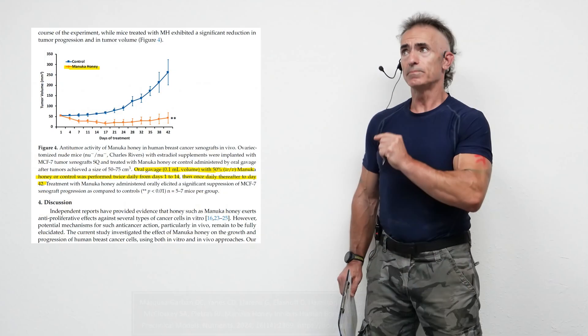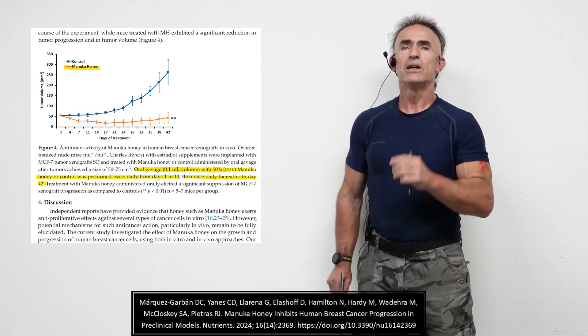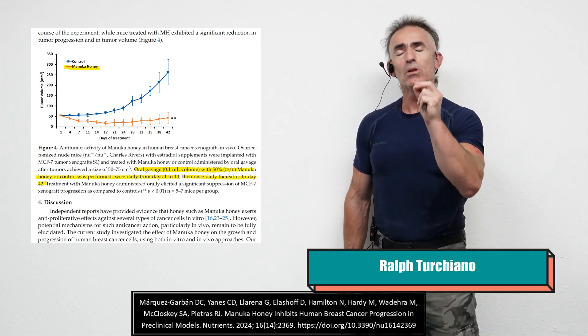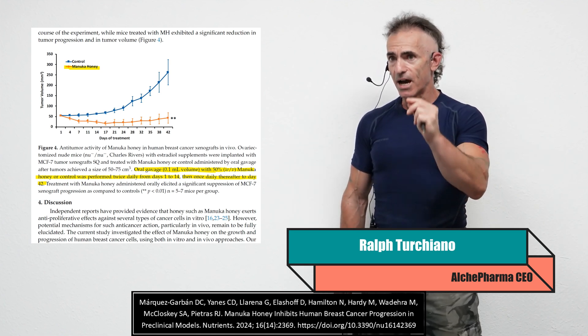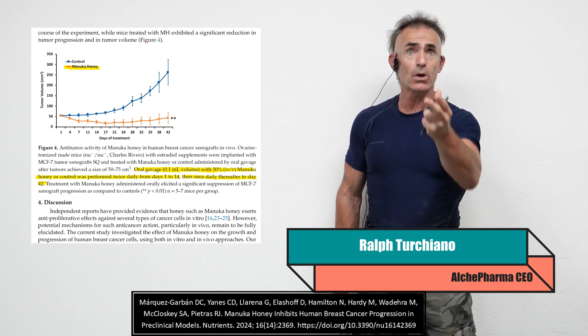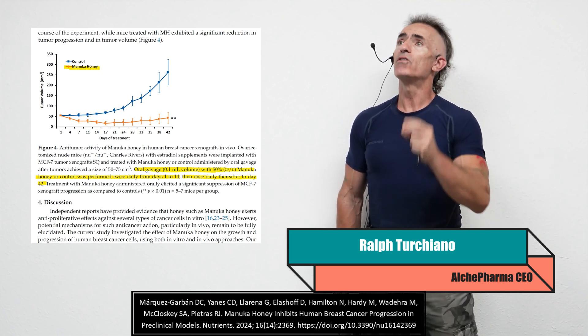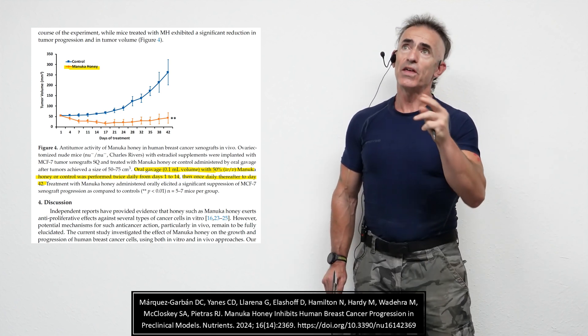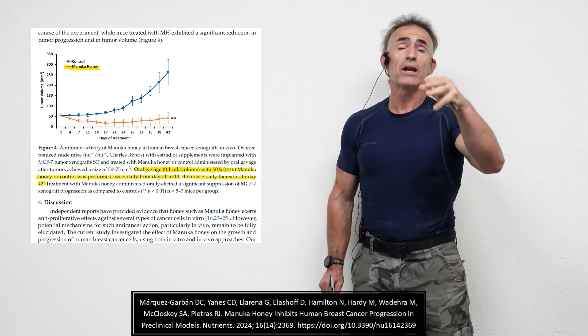What you and I are witnessing right here in this line chart is the effects in an animal model. I want to caveat that in animal study, it results in oral consumption, to be fair, through gavage of Manuka honey. I think it was a methylglyoxal rating of 550.